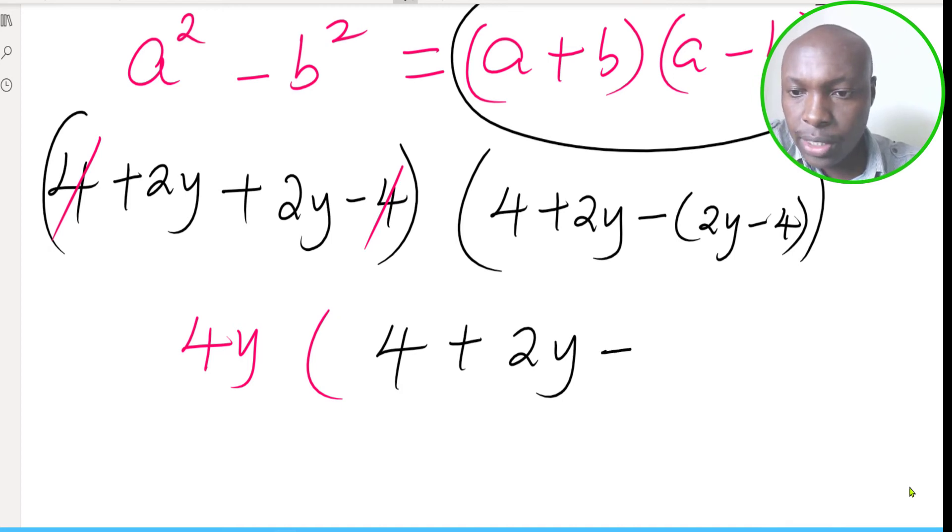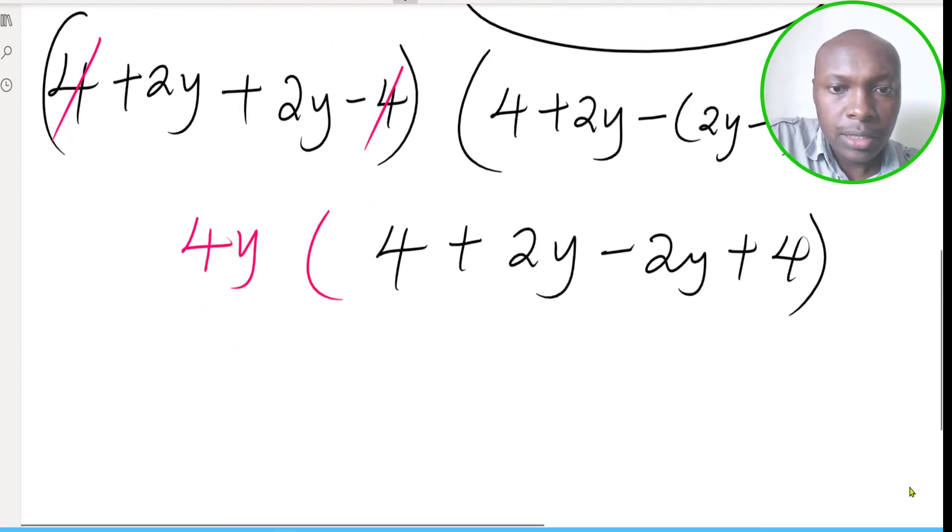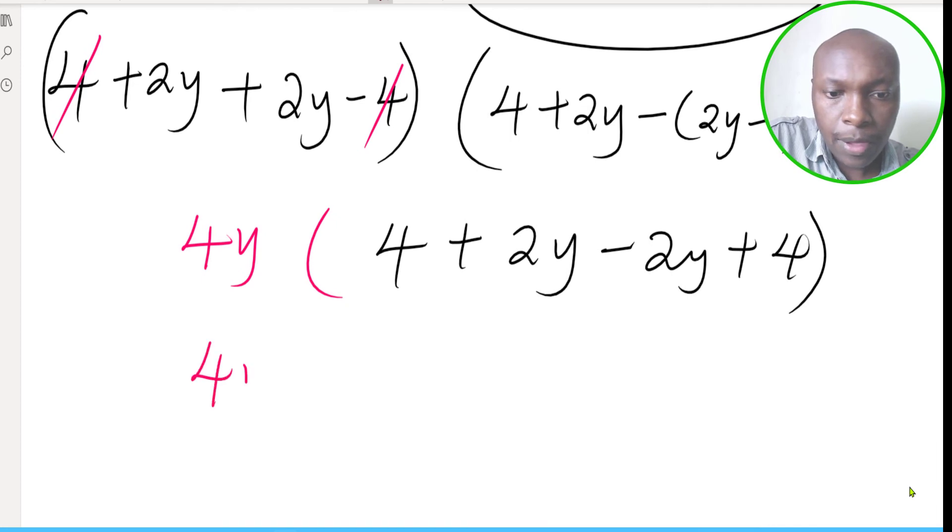Here we can open this bracket, get 4 + 2y, 4 + 2y, then subtract 2y, then this negative and this negative you get plus 4 like that. So this is, you get 4y, this is 4 plus 4 you get 8.